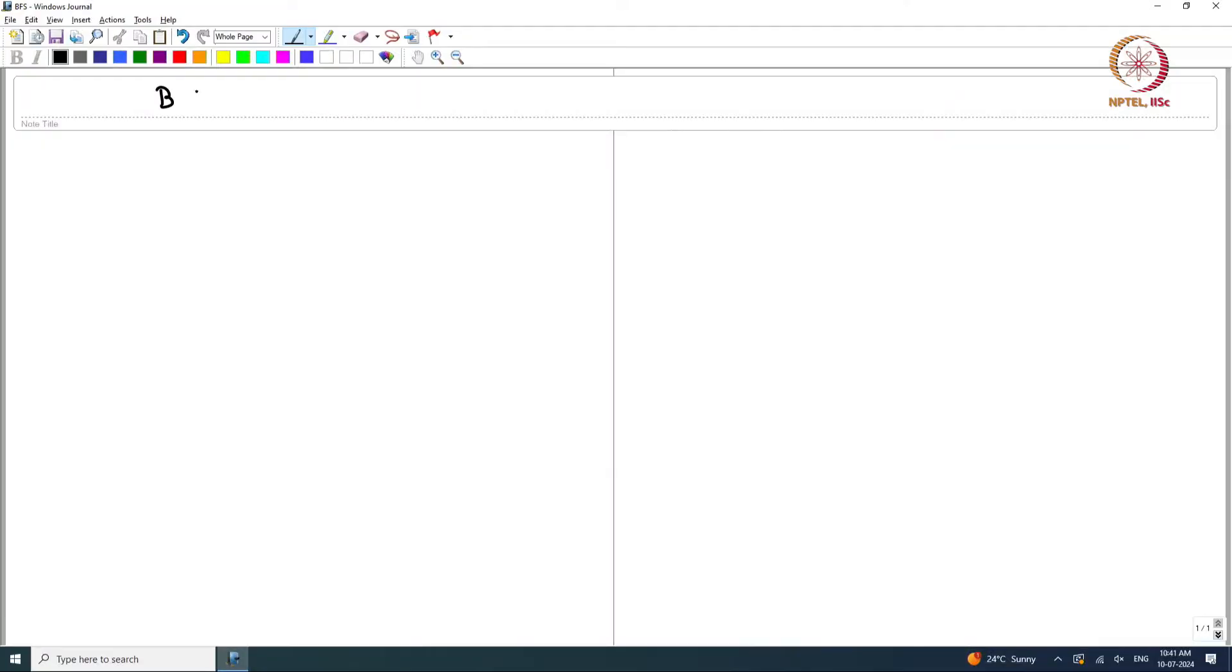Namaskara, in this session we are going to discuss another way of exploring the graph called breadth-first search, BFS. In depth-first search we explored by going from one vertex to its neighbor and from that neighbor to another neighbor of the vertex and so on.